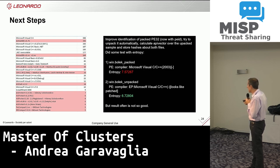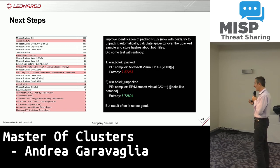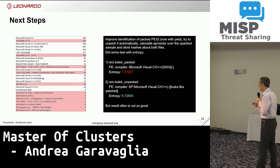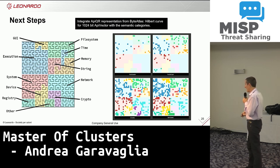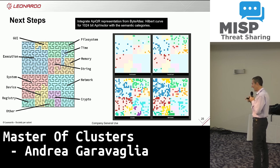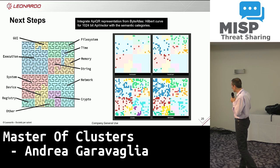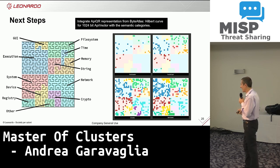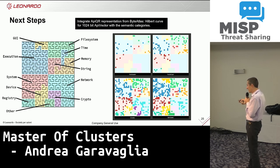Another thing I'm looking at is the statistics about the Malpedia repo. I see, for example, that the top packer used is Armadillo. So I'm thinking: if I'm able to understand that a sample is packed with Armadillo, maybe I can automate the unpacking before the analysis. Another nice thing, also coming from the Malpedia team, is using a Hilbert curve to visualize graphically the sample — so the malware analyst can see which part of two matching samples is actually matching. I find this very interesting and want to implement it into the TheHive report.